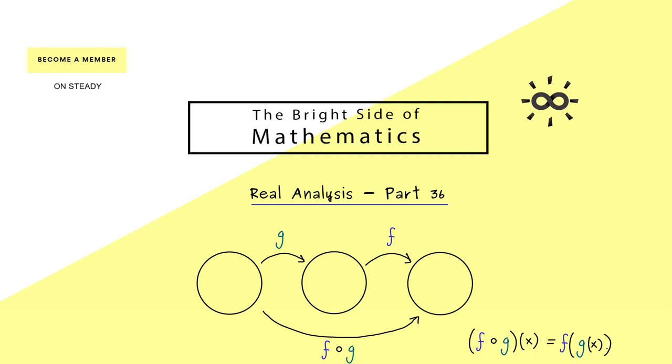Now for the topic about differentiability we are interested what happens with this property. More precisely what we want to put in is that g is differentiable at x₀ and f is differentiable at y₀. And y₀ should be the image of x₀ under g. Then the natural question is, is the composition also differentiable at x₀? Indeed the answer is yes and that is what we will talk about today.